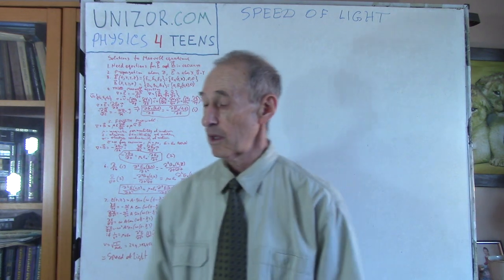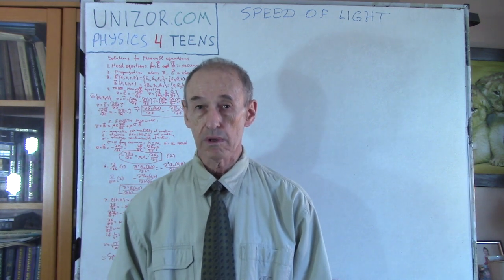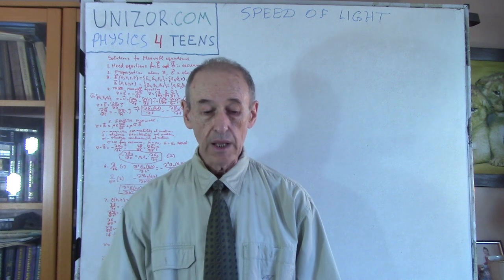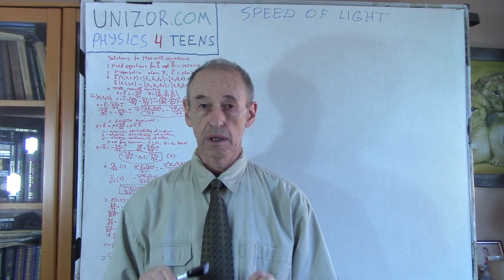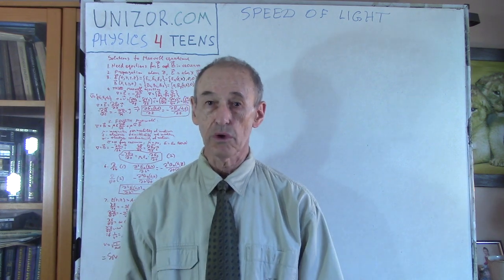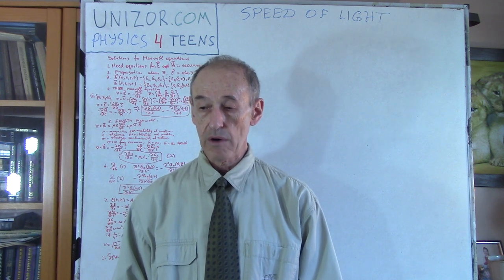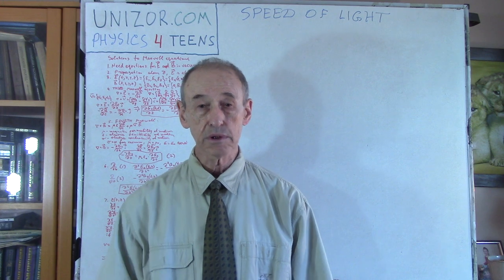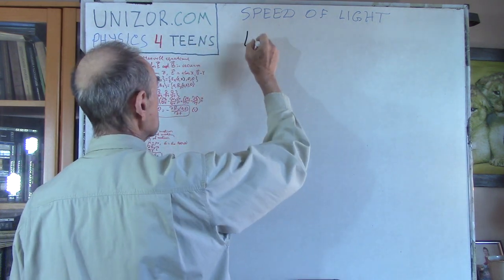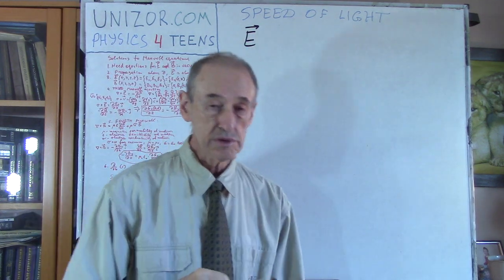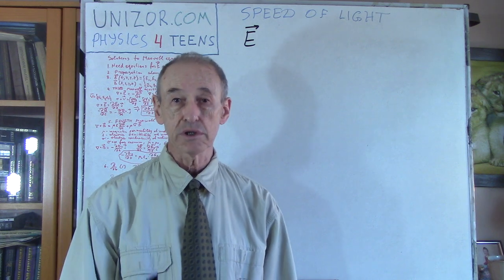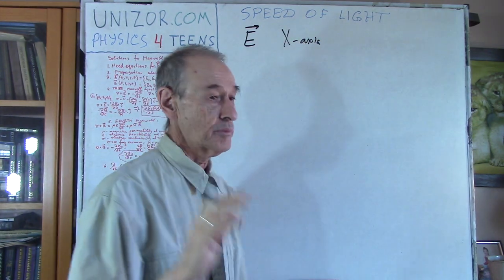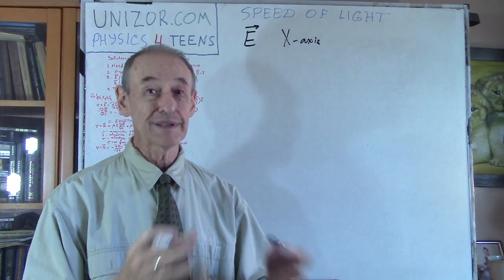The previous lectures were dedicated to the four Maxwell equations which describe electromagnetic field. So we are talking only about electromagnetic field. In this lecture we will talk about a very simple electromagnetic field. The electric intensity E is a vector, and we will assume this vector is changing in one particular direction along the x-axis. The magnetic field intensity, the magnetic component of the electromagnetic field, is vector B.